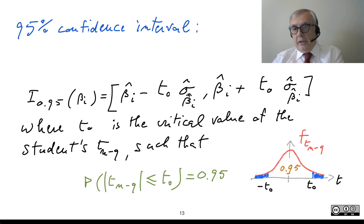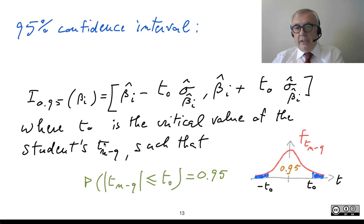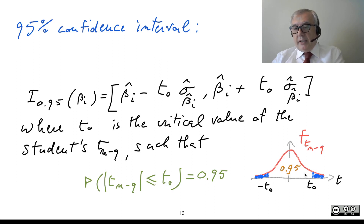Here t0 is the critical value of the Student's t with N minus Q degrees of freedom, defined in a very similar way to the standardized normal. Again, we look at the interval around the origin that encompasses 95% of the area, and this critical value is called t0.